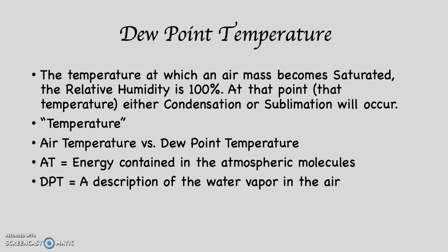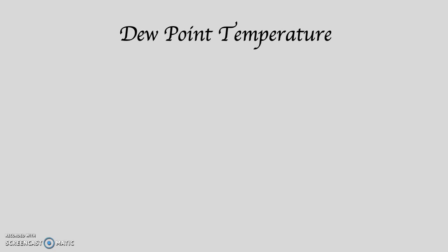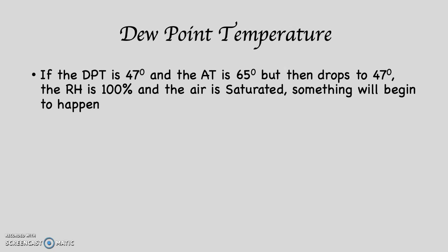So even though they both use the word 'temperature,' they do not mean exactly the same thing, although they are related. If the dew point temperature is 47 and the air temperature is 65, they are not the same number at this moment — dew point represents water in the atmosphere, air temperature represents energy. But if the air temperature drops down to 47 degrees, at that point the air temperature and the dew point temperature will be the same number — 47 degrees. At that moment, the relative humidity is 100%, the air is saturated, and something will begin to happen.